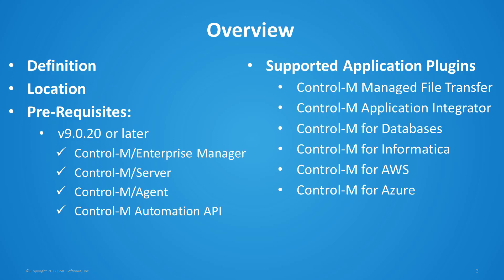We are all familiar with local connection profiles. You can define them using the Control-M Configuration Manager and they are stored locally on the Control-M agent it was created on. Centralized connection profiles were introduced in Control-M 9.20. They provide the ability to define connection profiles once in a central location on the Control-M Enterprise Manager and use them across all available agents. The connection profiles are stored on the Control-M Enterprise Manager database and are synchronized with the Control-M Servers connected to that Enterprise Manager. Centralized connection profiles are unique by name and by application type.